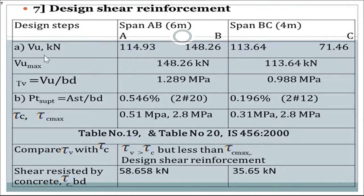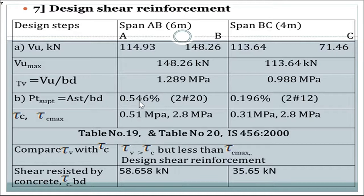Now design the shear reinforcement. From the shear force envelopes of Cases 1, 2, and 3, the maximum shear forces are: at support A and B (toward A) = 148.26 kN; at support B (toward C) and support C = 113.64 kN. Nominal shear stress τV = VU/bd = 1.289 and 0.988 N/mm². Percentage of steel at support: for AB, 2 bars of 20 mm are available — p = 0.546%; for BC, 2 bars of 12 mm — p = 0.196%. From IS 456-2000 Table 19 and Table 20 (pages 72–73), we obtain τC and τC_max.